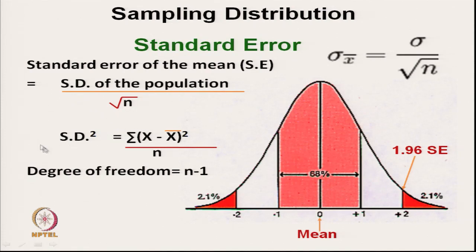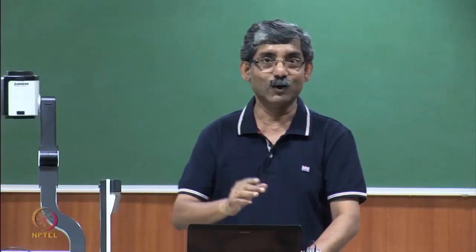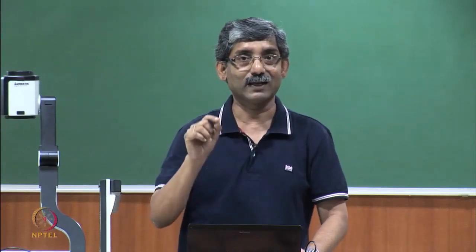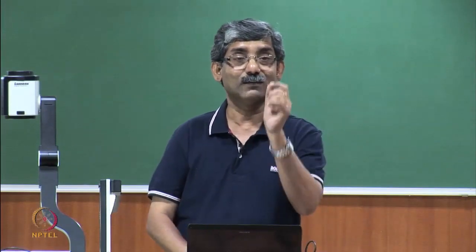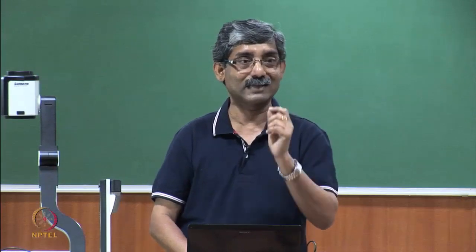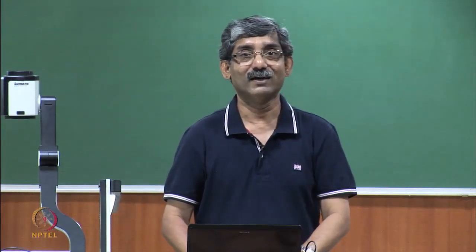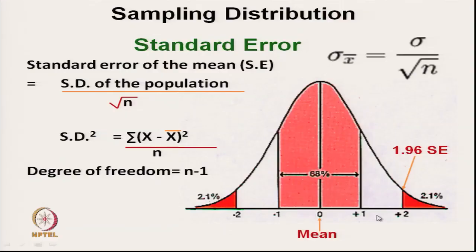In sampling distribution we do not use the standard deviation term. In normal distribution we use plus minus 1 sigma, plus minus 2 sigma, plus minus 3 sigma. In sampling distribution we use the standard error — so it is expressed as t times the standard error. The factor t here is 1.96 multiplied by the standard error for the relevant confidence level.